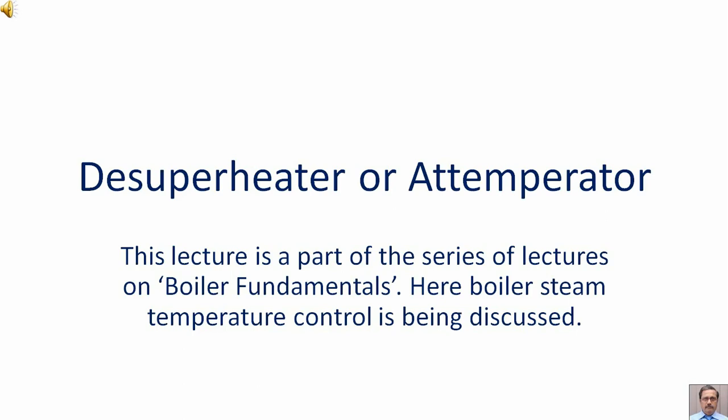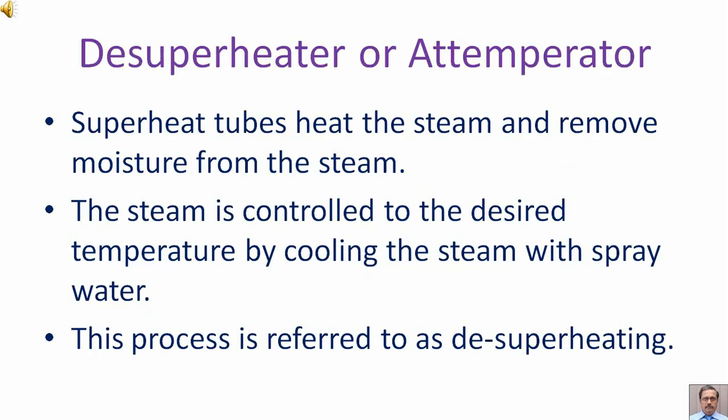This lecture is part of the series on boiler fundamentals, discussing boiler steam temperature control. Superheat tubes heat the steam and remove moisture. The steam is controlled to the desired temperature by cooling it with spray water — a process referred to as D Superheating.